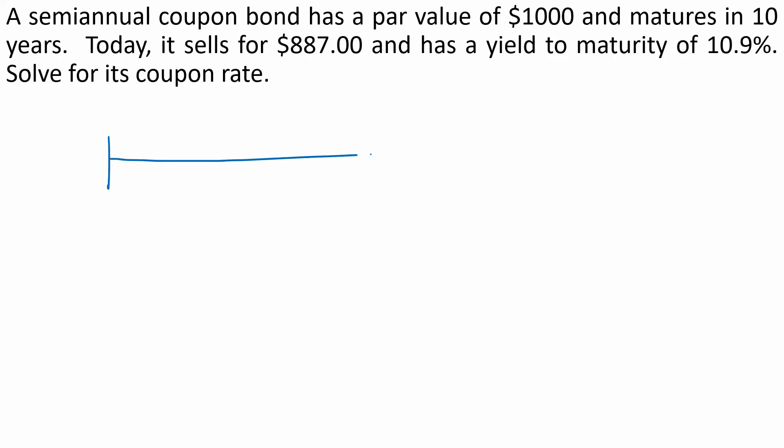A semiannual coupon bond has a par value of $1,000 and matures in 10 years, therefore we have 20 periods.